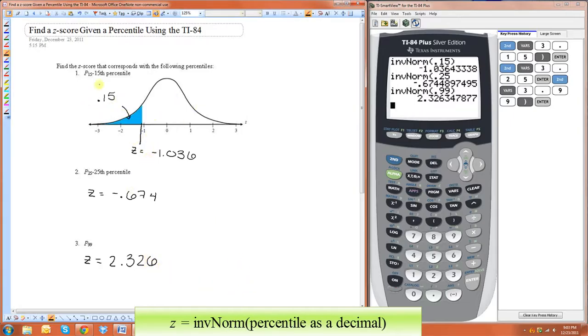One good thing to check is if the percentile is less than 50%, it should be a negative z-score, and if it's more than 50%, it should be a positive z-score. That's all.